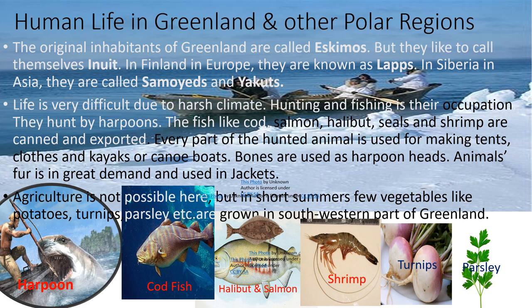Human life in Greenland and other polar regions: the original inhabitants of Greenland are called Eskimos, but they like to call themselves Inuit. In Finland, Europe, they are known as Lapps. In Siberia of Asia, they are called Samoyeds and Yakuts. Life is very difficult due to the harsh climate. Hunting and fishing is their occupation — they hunt by harpoons. Fish like cod, salmon, halibut, seals, shells, and shrimp are canned and exported.